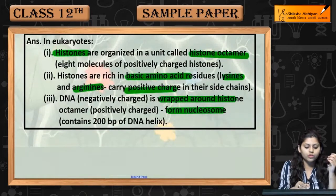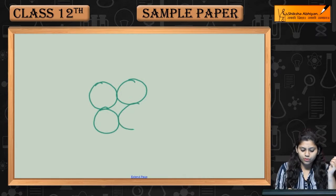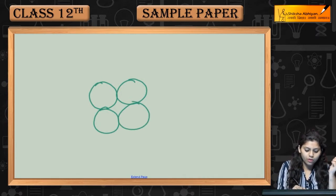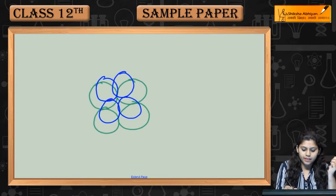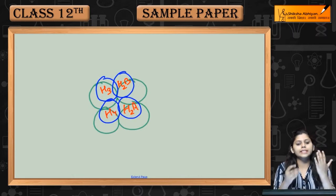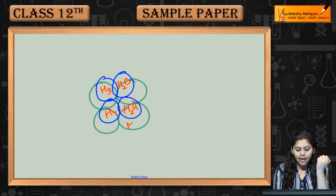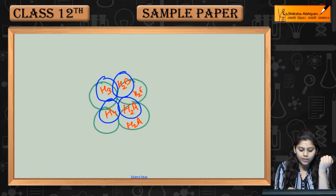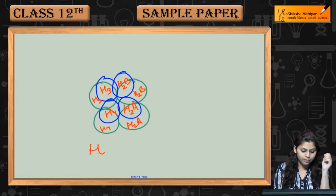Nucleosome, let me draw structure. Eight histone proteins hai, jo histone octamer banati hai. This is H2A, H2B, H3 and H4. Similarly, you can see front proteins, 4 core histone proteins. It will be the same H2A, H2B, H3 and H4. This is histone protein octamer.